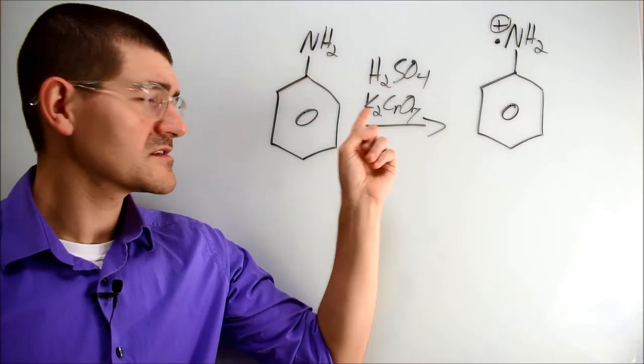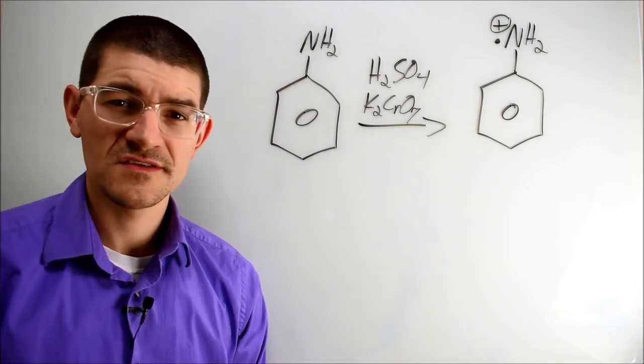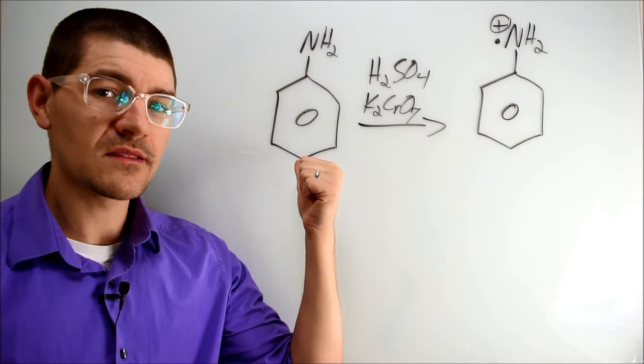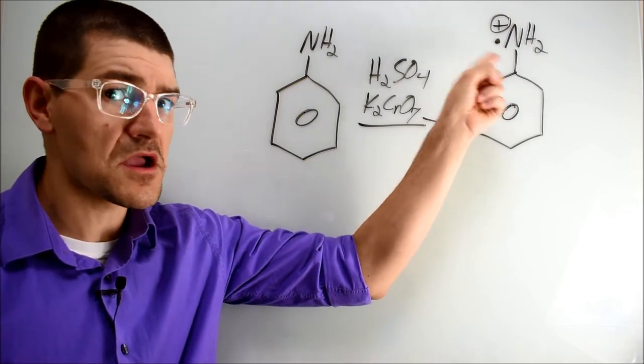Which brings us, mercifully, to the actual synthesis of mauveine, or at least Perkin's mauveine. The combination of sulfuric acid and potassium dichromate is our first step in mauveine synthesis. That is an extremely acidic, oxidizing environment that takes our regular aniline and creates a radically cationic aniline.